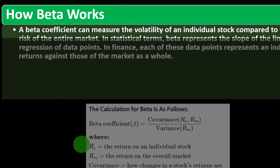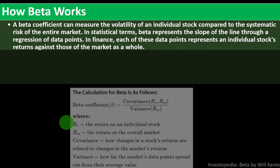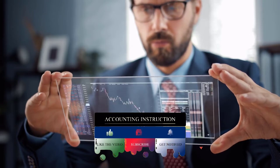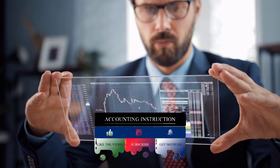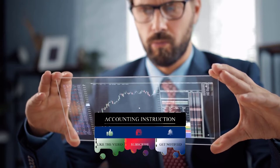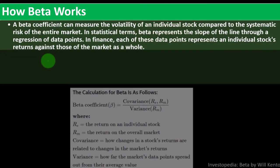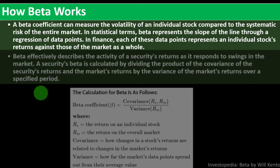How beta works: a beta coefficient can measure the volatility of an individual stock compared to the systematic risk of the entire market. In statistical terms, beta represents the slope of the line through a regression of data points. In finance, each of these data points represents an individual stock's return against those of the market as a whole. We might dive into this further in practice problems.